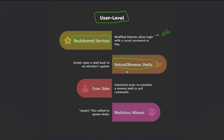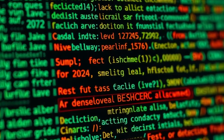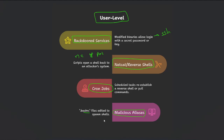We see netcat reverse shells a lot in penetration testing engagements and CTF scenarios, where you establish a connection back from the victim machine to the attacker using netcat, IP, and port. The third type is cronjobs — a scheduled task created to execute a script or binary repeatedly. An attacker would create a task that executes a reverse shell or malicious binary. The last one is malicious aliases, where the attacker edits the .bashrc file to point to a reverse shell or netcat reverse shell. These are user-level backdoors and the most common ones seen in cyber attacks.